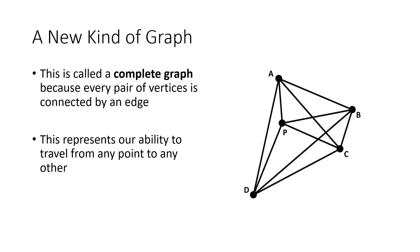So the graph that we're talking about here is called a complete graph, because every pair of vertices is connected by an edge. Every two points has an edge that connects them. Now that's different from some of the graphs that we saw before.